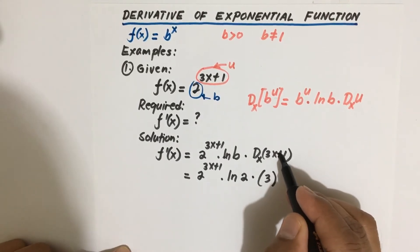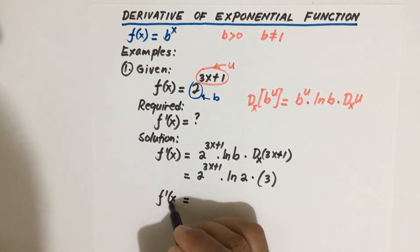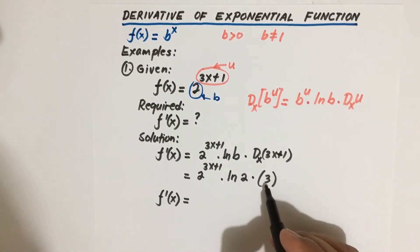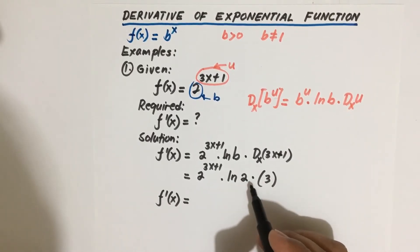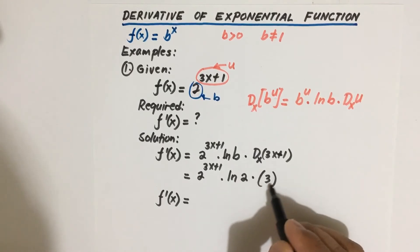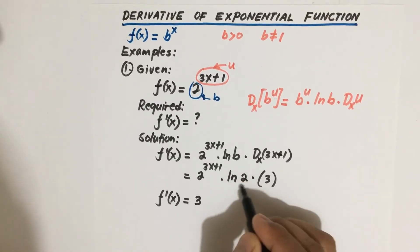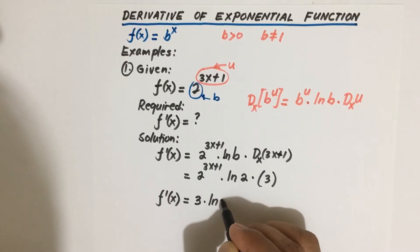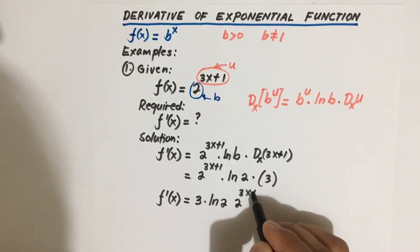Therefore our f prime of x is equal to, so be careful class, you are not allowed to multiply 2 and 3 here. So that is a wrong move if you do that. So ln 2 times 3 is different from ln of the product of 2 and 3. So to avoid that mistake, better to write this constant first. So we have 3 times, this is also a constant actually, so times ln of 2 times 2 to the 3x plus 1.